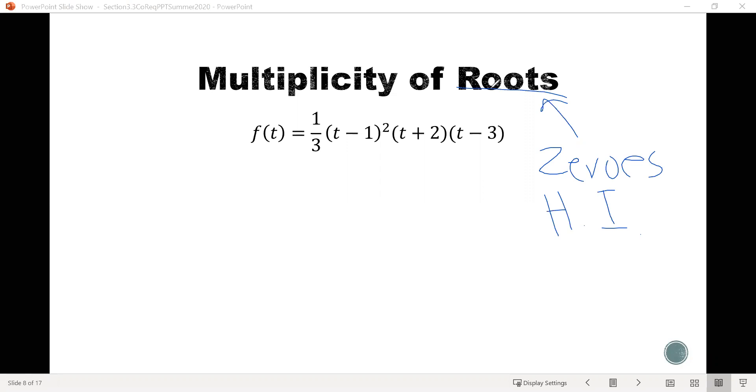And so we know from this function that we see right here, you actually did this one in a previous video, we have already found that the horizontal intercepts of this function would be at 1, 0, negative 2, 0, and 3, 0.